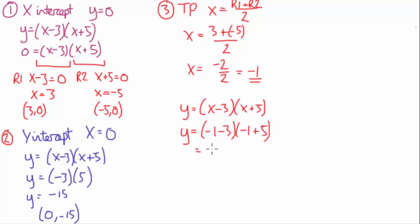So minus 1 minus 3 is minus 4, and that's going to be times by 4. So the y-coordinate is going to be minus 16. So overall the turning point coordinates are going to be minus 1 and minus 16.